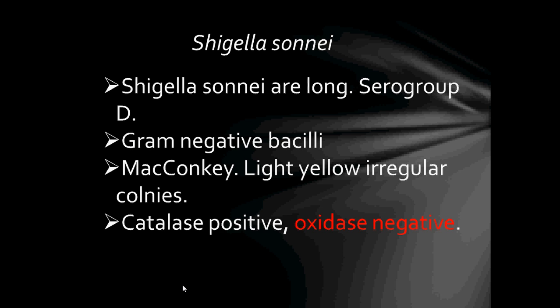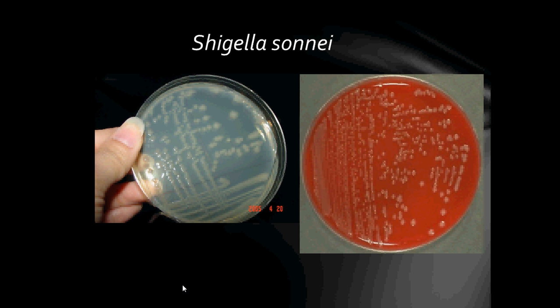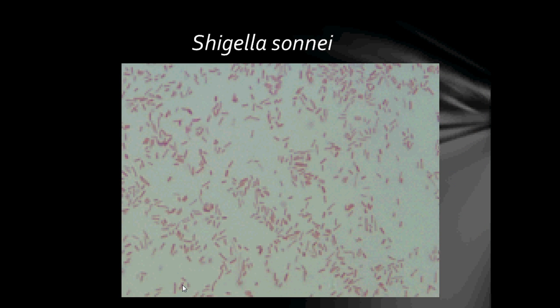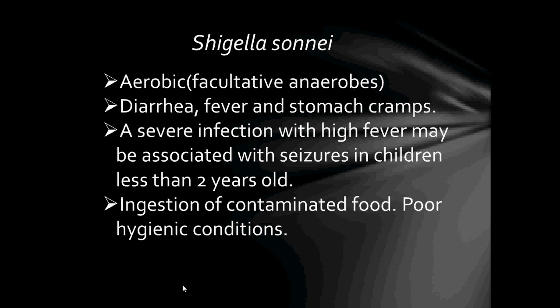Next is Shigella sonnei, serogroup D. They are Gram-negative bacilli and grow on MacConkey, forming light yellow irregular colonies. They are catalase positive and oxidase negative. Shigella sonnei are aerobic, facultative anaerobes, and cause diarrhea, fever, and stomach cramps. A severe infection with high fever may be associated with seizures in children less than 2 years of age, usually due to ingestion of contaminated food and poor hygienic conditions.